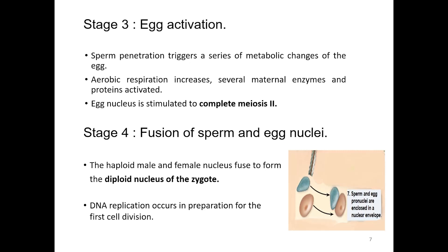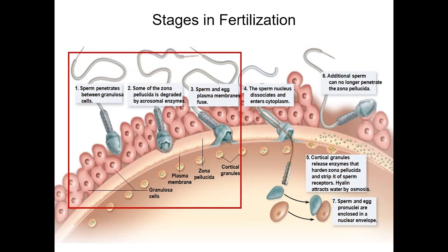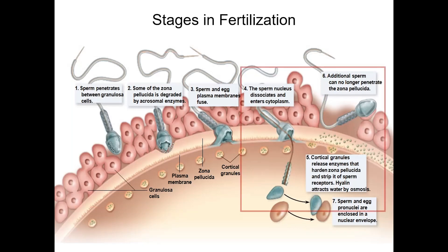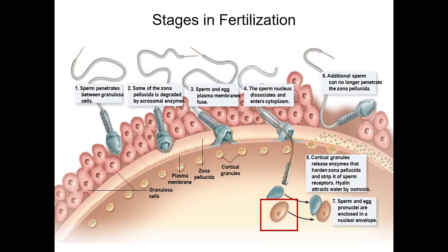The last stage is the fusion of sperm and egg nuclei. During this stage, the haploid male and female nuclei fuse to form the diploid nucleus of the zygote. DNA replication occurs in preparation for the first cell division. In summary, fertilization begins with the acrosomal reaction when the sperm penetrates the protective layer by secreting digestive enzymes, followed by cortical reaction hardening of the zona pellucida to block polyspermy, egg activation induced by sperm entry, and finally the formation of a diploid zygote by fusion of sperm and egg nuclei.